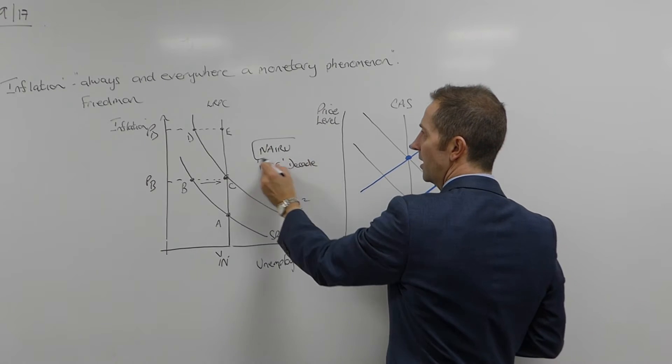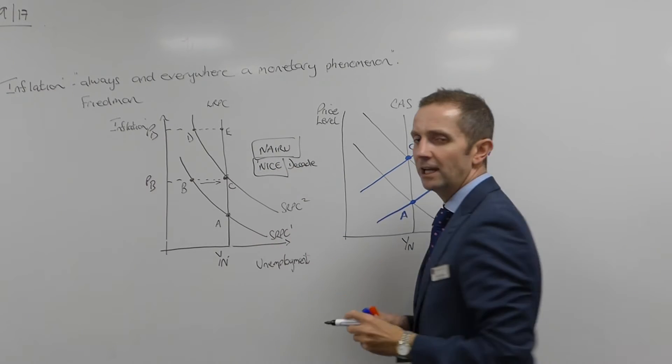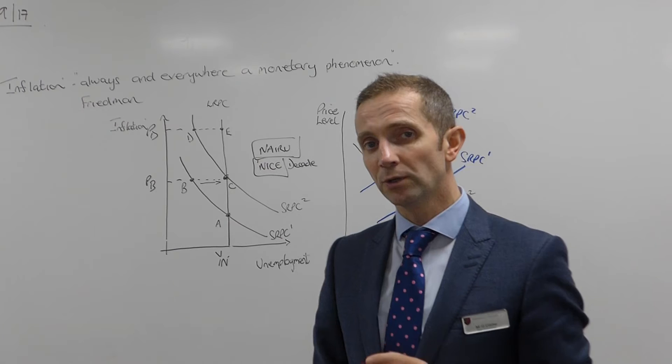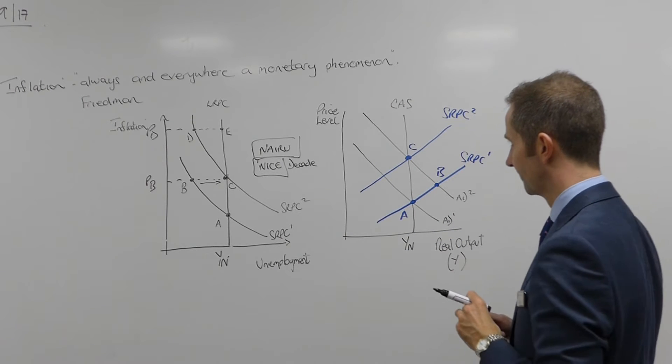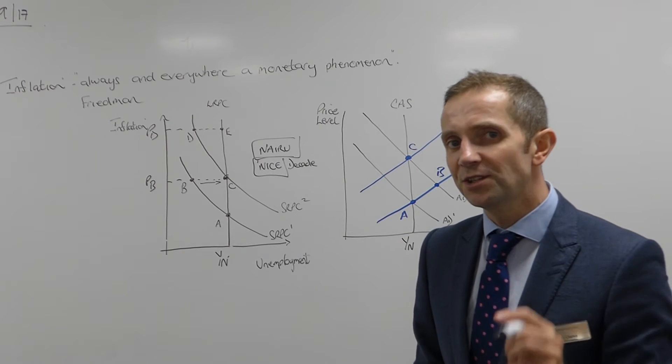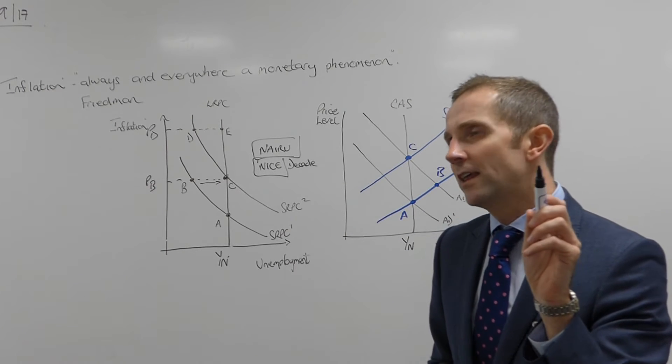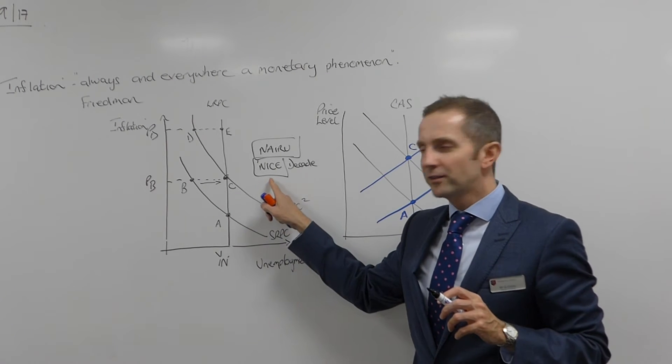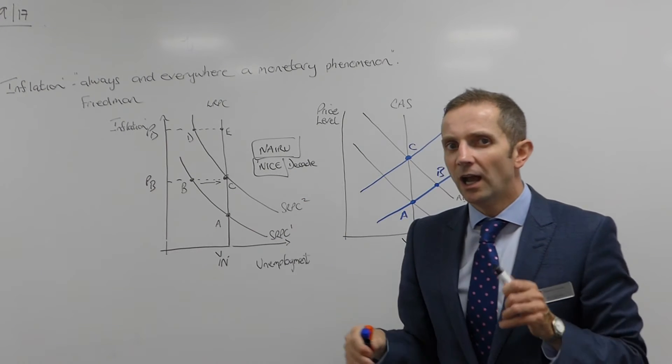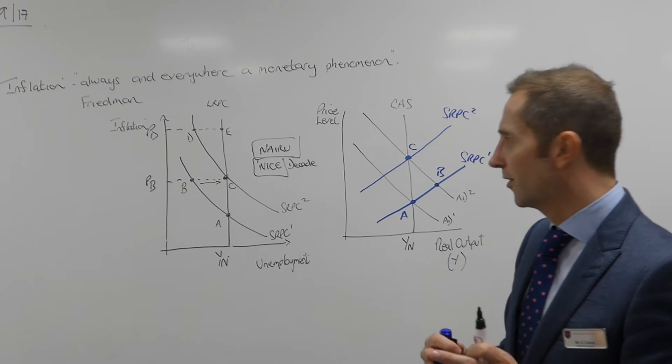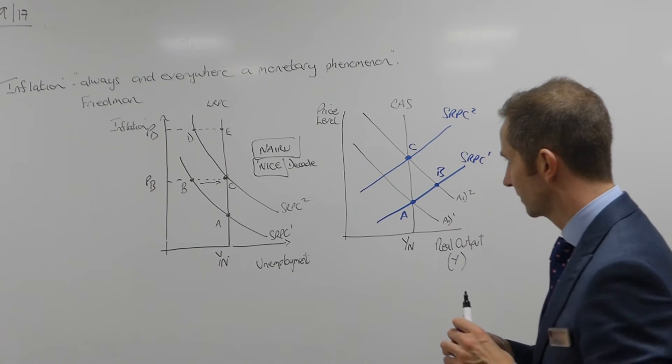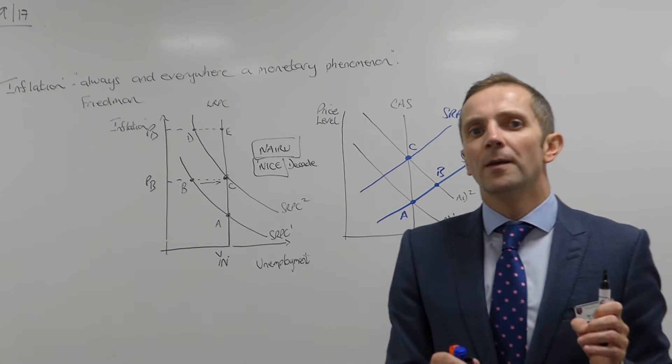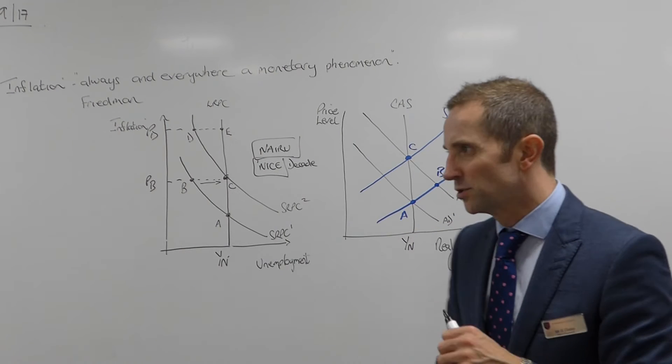Now, contrast the NIRU with what Mervyn King referred to in his book as the NICE Decade. Now, the NICE Decade, let me just get this right, is the non-inflationary period of continuous expansion. And, Mervyn King was really referring to the early 2000s in that respect, when we had growth, but we didn't have any inflationary pressures.